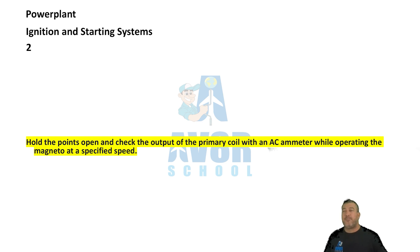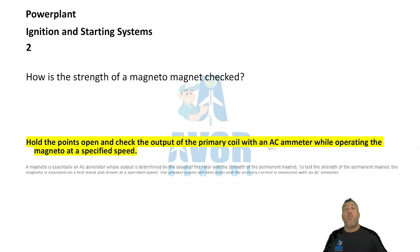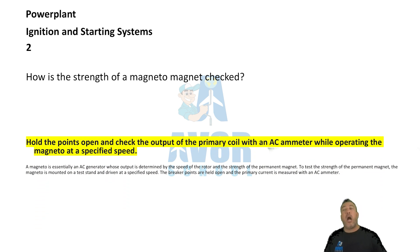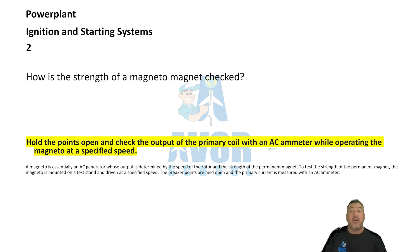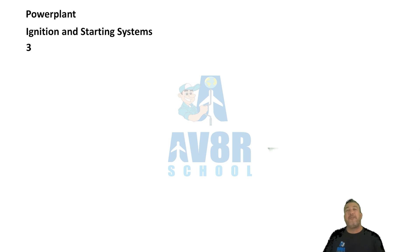Number two: Hold the points open and check the output of the primary coil with an AC ammeter while operating the magneto at a specified speed. How is the strength of the magneto checked? You hold the points open and check the output of the primary coil with an AC ammeter while operating the magneto at a specified speed.